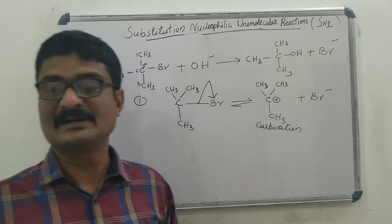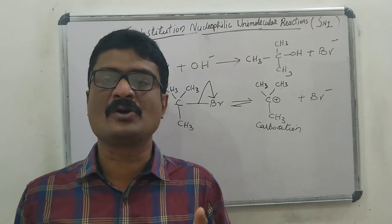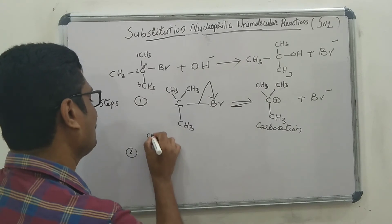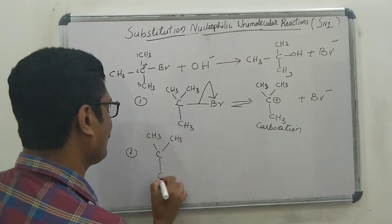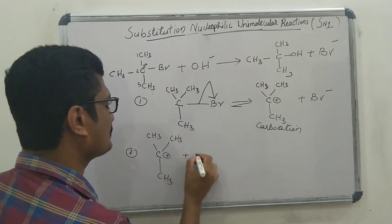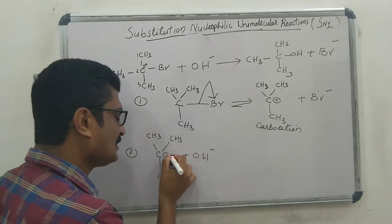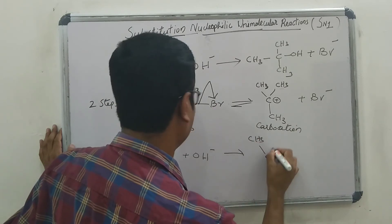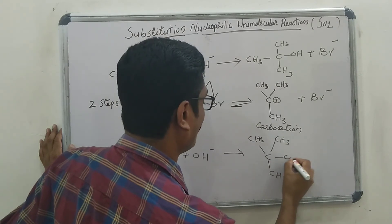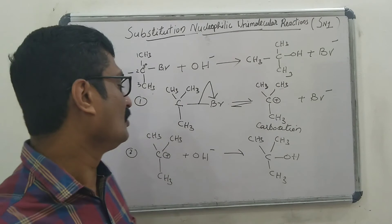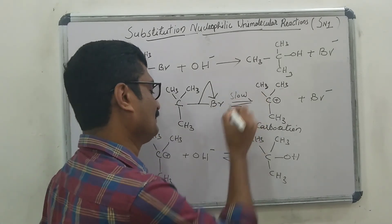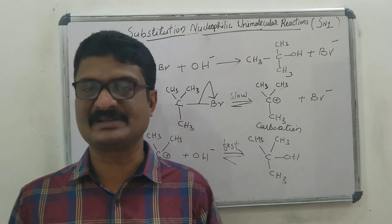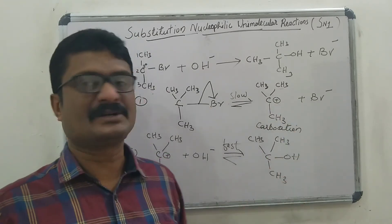Then the second step: this carbocation reacts with a nucleophile to complete the substitution reaction. In this example, the nucleophile is hydroxide ion, OH⁻. OH⁻ attacks the positively charged carbon atom of the carbocation and forms the product (CH₃)₃COH. The first step is slow and the second step is faster, and hence the rate-determining step is the first step. We get the desired product, tertiary butyl alcohol.